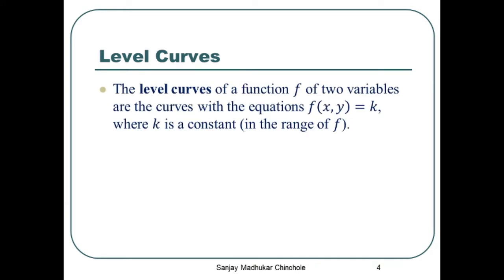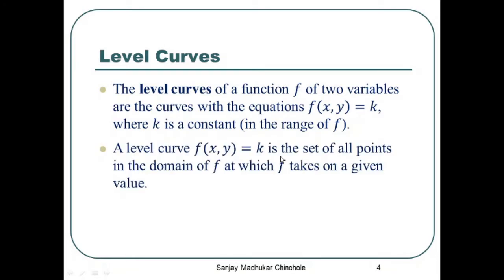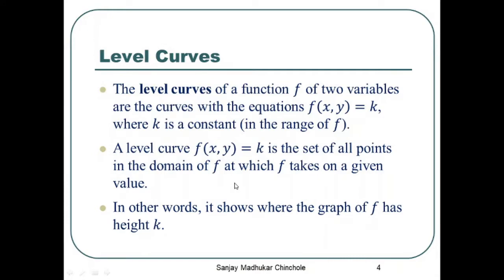What are level curves? The level curves of a function f of two variables are the curves with the equation f(x, y) equal to k, where k is a constant that lies in the range of f. If k is not in the range of f, we cannot define f(x, y) equal to k. For each k in the range of f, we can find the level curve of f at k. The level curve f(x, y) = k is the set of all points in the domain of f at which f takes on a given value — that is, the set of ordered pairs (x, y) in the domain for which the value is k. In other words, it shows where the graph of f has height k.